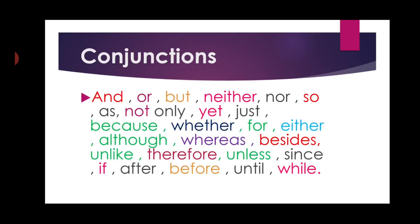Now students, here is the list of conjunction words which we use in our sentences, words, nouns, or phrases when we join them. The words are: and, or, but, neither, nor, so, as, not only, yet, just, because, whether, for, either, although, whereas, besides, unlike, therefore, unless, since, if, after, before, until, while. These are all conjunction words which we add between two words or sentences to make a single one.